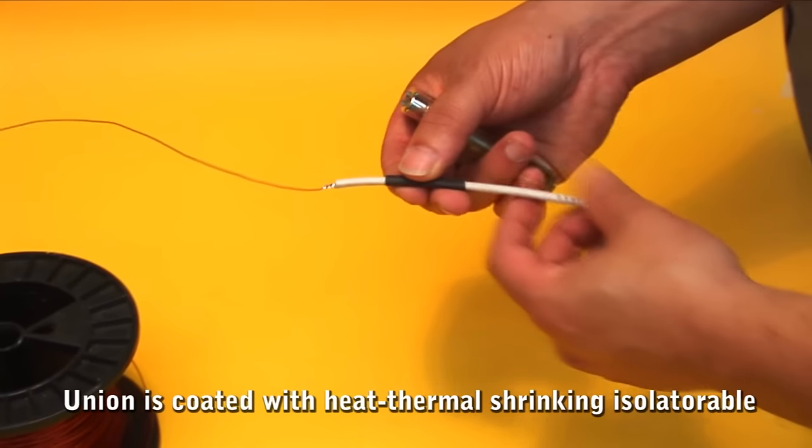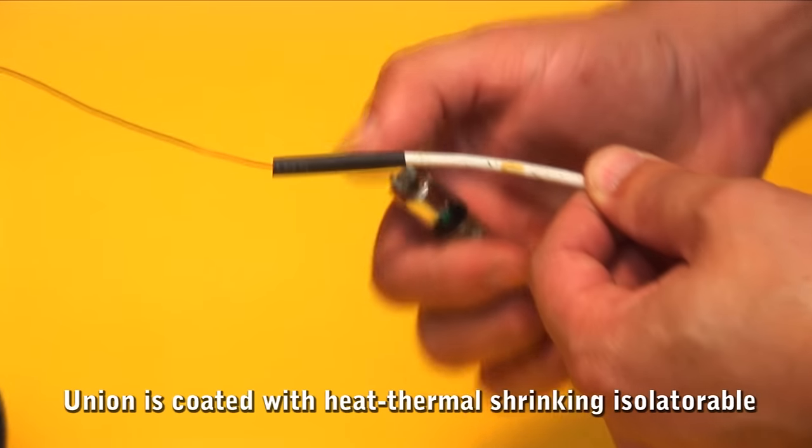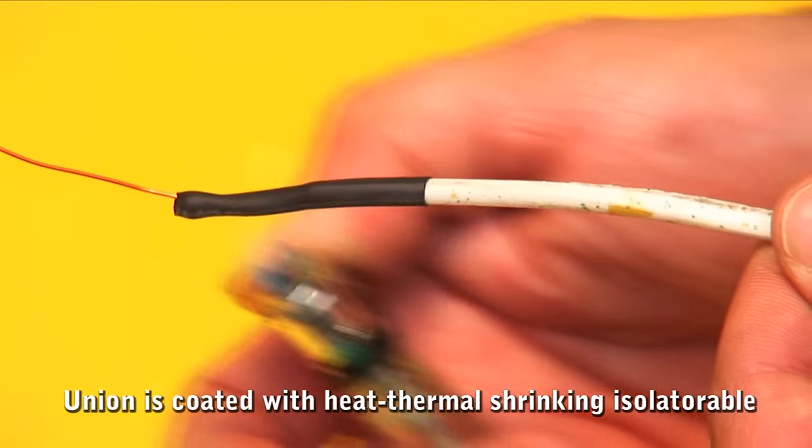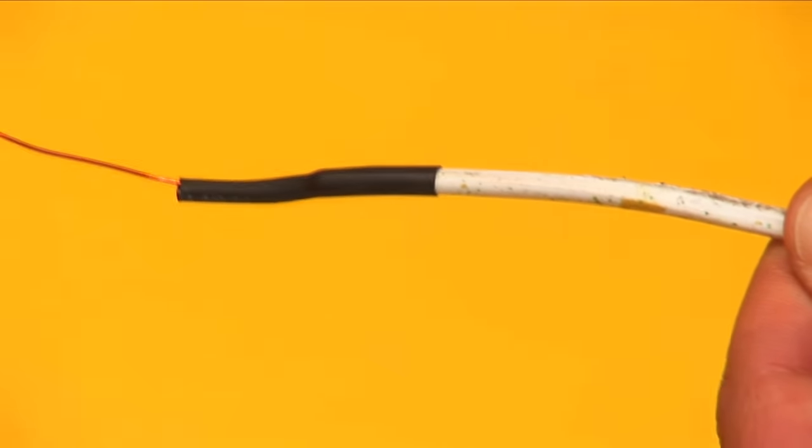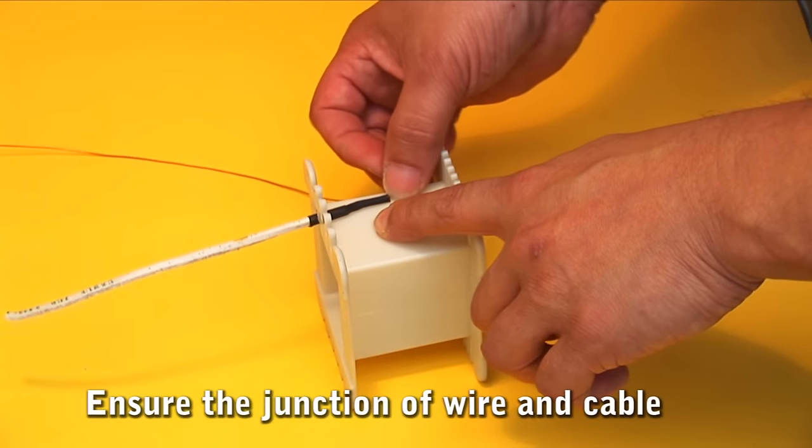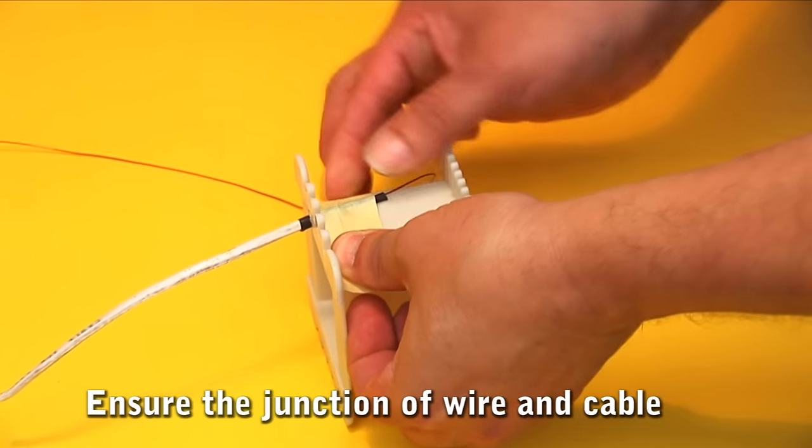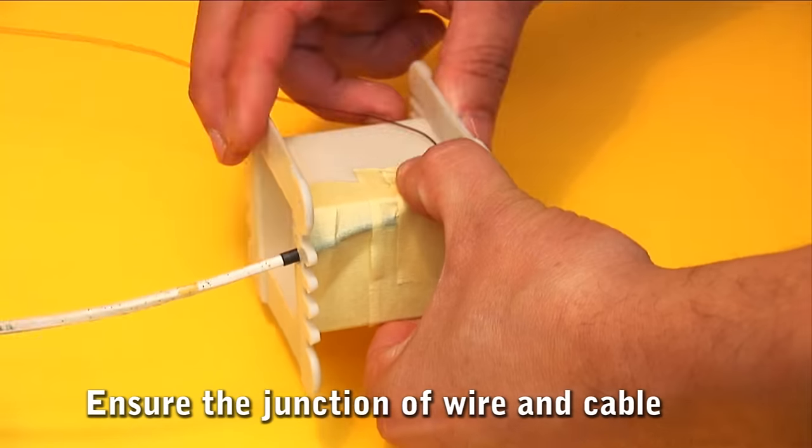Use thermal shrinking insulator 3 millimeters to isolate the joint. This heat shrink insulator isolates and takes the form of what it covers. Insert the wire through the hole. The wire is secured, leaving the union within the mold. Secure the wire with masking tape.